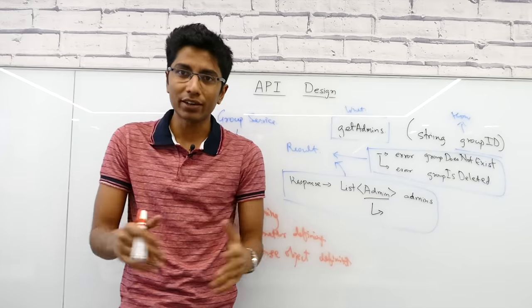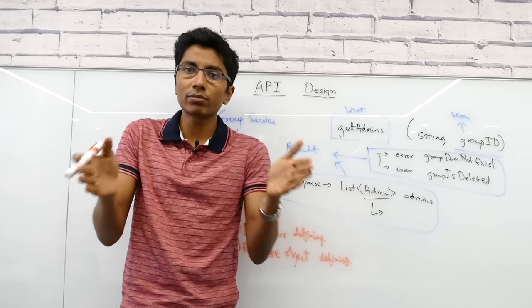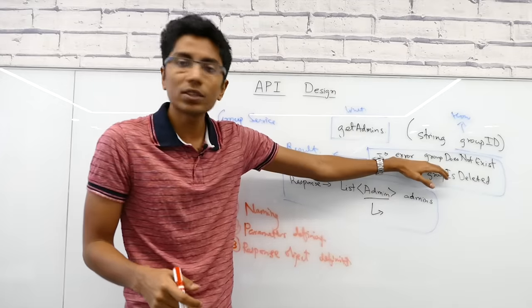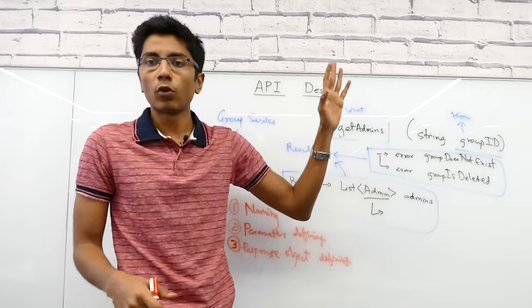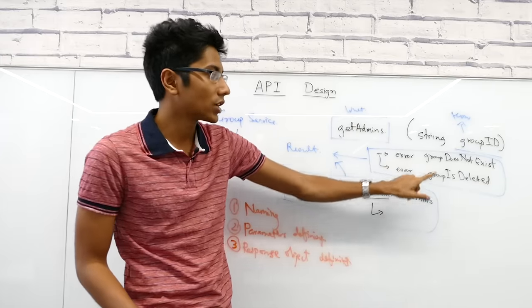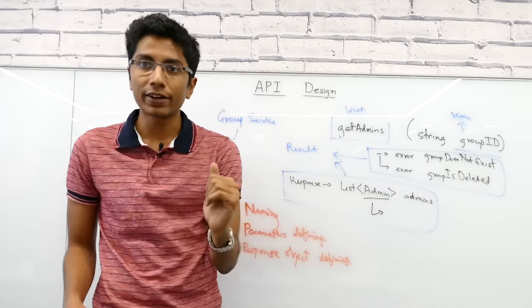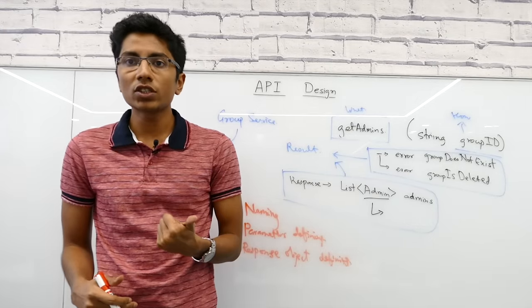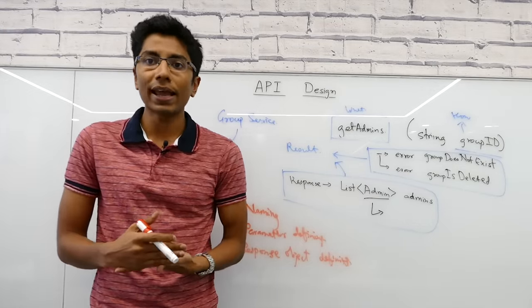All of these things are subjective, but extremes are always odd. Taking absolutely no responsibility where if the group doesn't exist then I just throw a 404 error, that's wrong. Because this is an expected error from your service. Similarly, the group is deleted is an expected error. In general, when designing errors, think about the common expectations and the responsibilities that your API has.